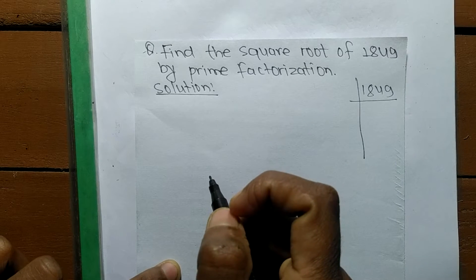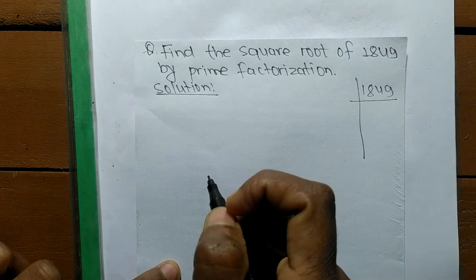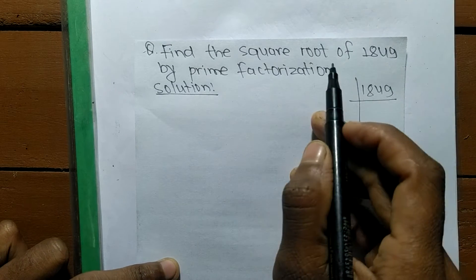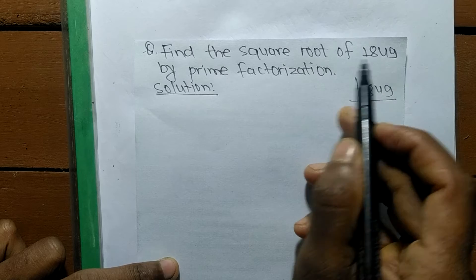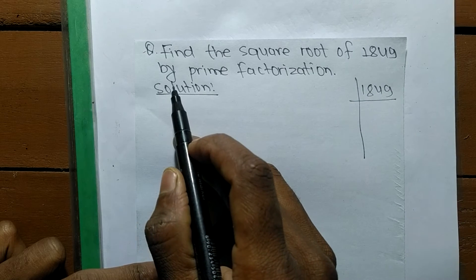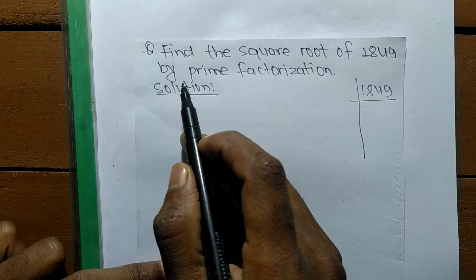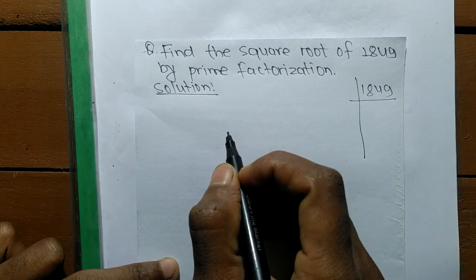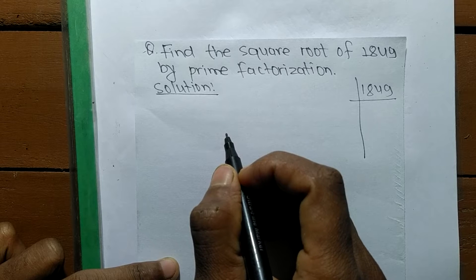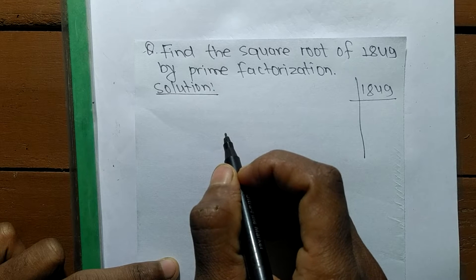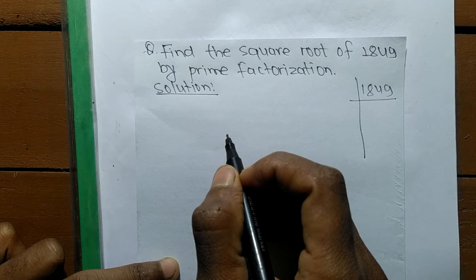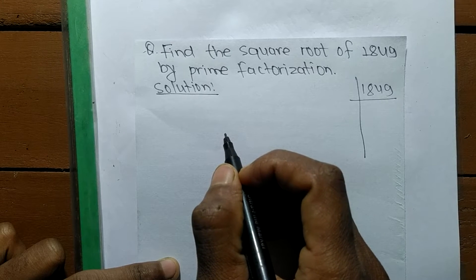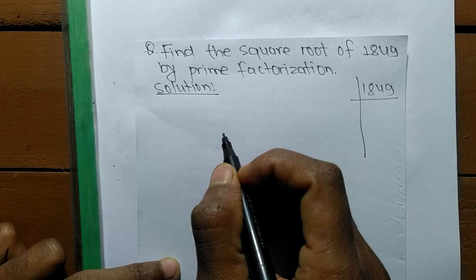Today in this video we shall learn to find the square root of 1849 by prime factorization method. To find the square root by prime factorization method, first we have to find out the prime factors of the given number.